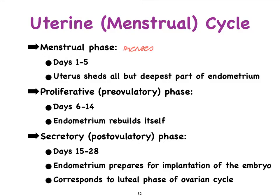This is then followed by the so-called proliferative phase, and as the name says, this is the time when the endometrium proliferates or basically rebuilds itself. This takes from about day 6 to 14, assuming a cycle of 28 days in a perfect world. And then finally, we get to the secretory phase. We can refer to the proliferative phase as the pre-ovulatory phase, while we refer to the secretory phase as the post-ovulatory phase.